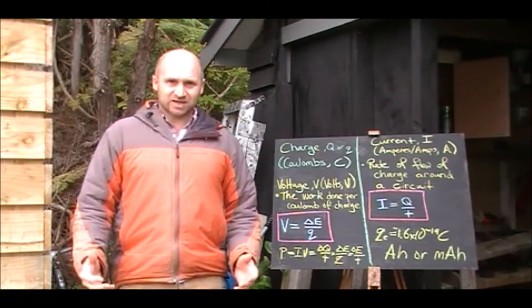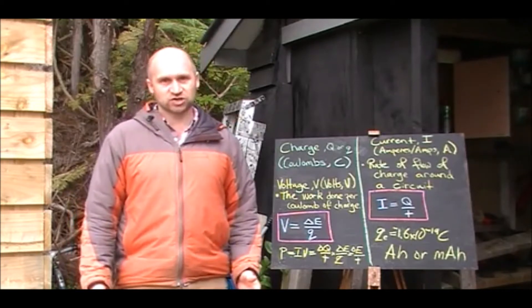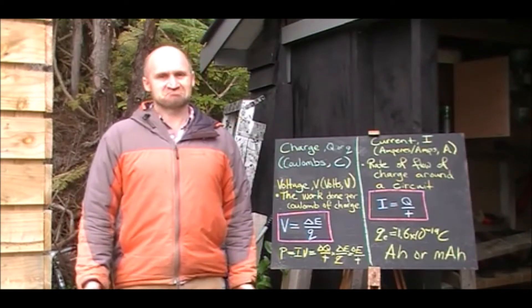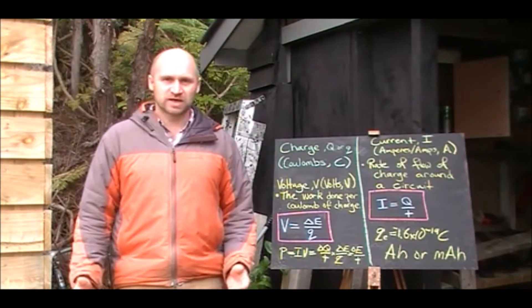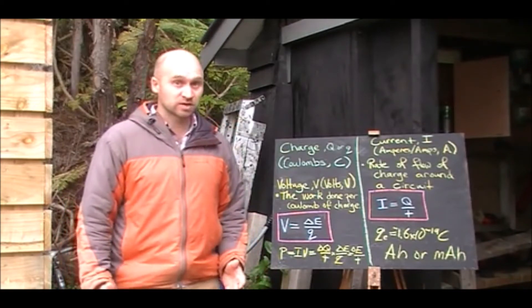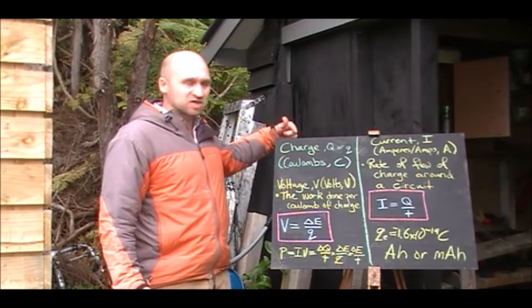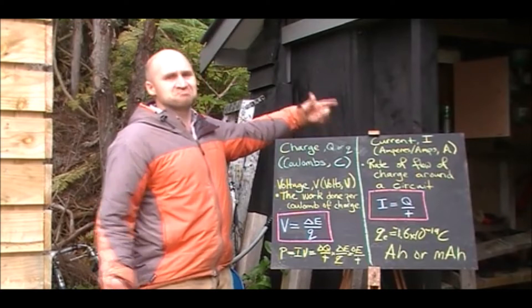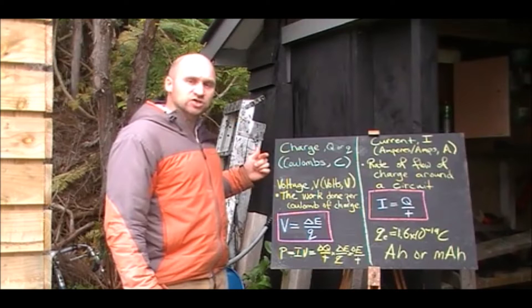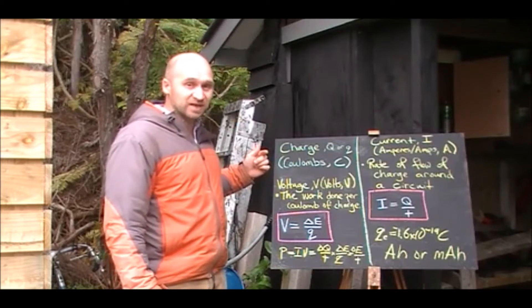The basic quantity of electricity, the fundamental quantity is charge. In mechanics, mass is the fundamental quantity. How much matter have we got? In electricity, it's charge. How much electricity have we got? For charge, we can use the symbol capital Q or little q interchangeably. The unit for charge is coulombs and the symbol for coulombs is a capital C.